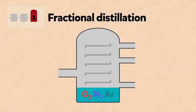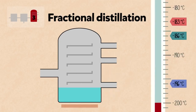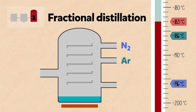Let's have a look at this process in detail. First, the air is cooled to minus 200 degrees Celsius and passed into the fractionating column. It is then gently warmed. The temperature rises from minus 200 degrees C, and when it gets to minus 196 degrees Celsius, the nitrogen boils off and is collected. When it reaches minus 186 degrees Celsius, the argon boils off, and when it reaches minus 183 degrees Celsius, the oxygen boils off.